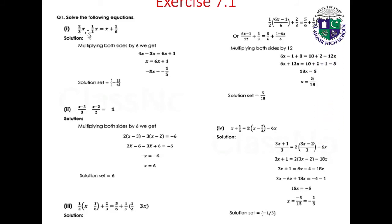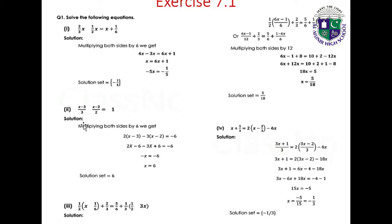Part 1: 2/3x minus 1/2x equals x plus 1/6. Solution: multiplying both sides by 6 we get 4x minus 3x equals 6x plus 1, so x equals 6x plus 1, giving minus 5x equals minus 1, therefore x equals minus 1/5. Solution set: {-1/5}.